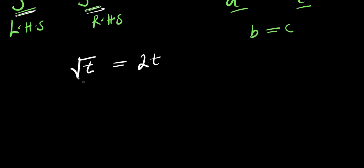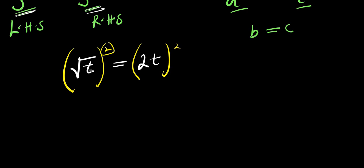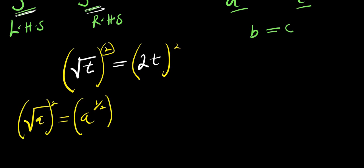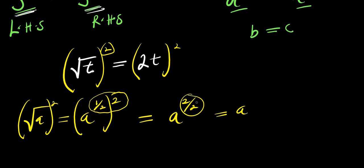We are solving for t and there is a square root here. To eliminate the square root, we take the square of both parts of this equation. The square of square root of t gives us t. This works because square root of a is the same as a to the power of 1 over 2. Taking the square raises the exponent to 1 over 2 times 2, which gives 2 over 2, which equals 1 — so we just get a. That is why the square root cancels, leaving just t.